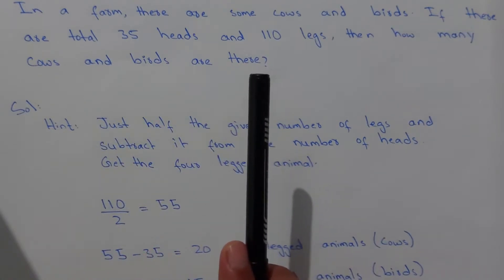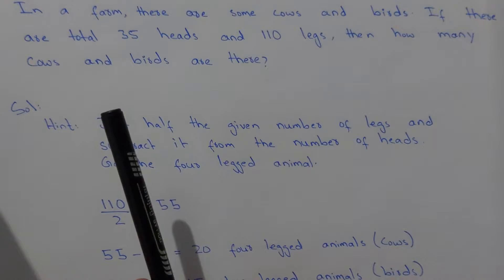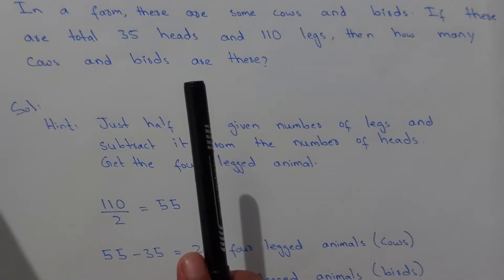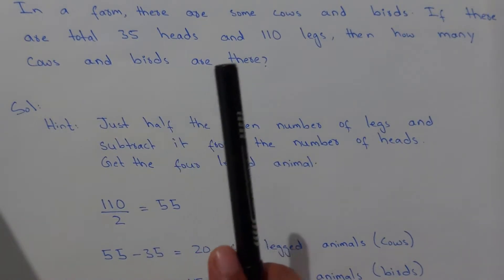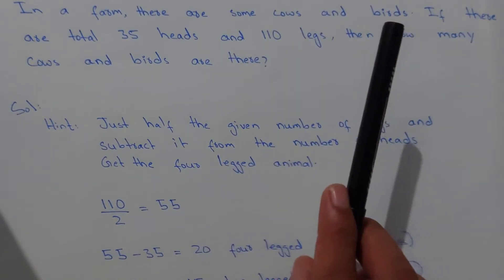Now in these kinds of problems, whenever we are given a four-legged animal and a two-legged animal, it means here in this case cows and birds. In these kinds of problems, what we do is...